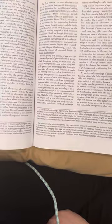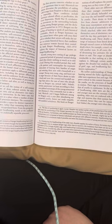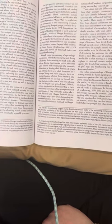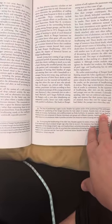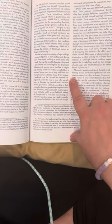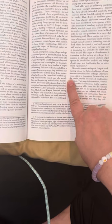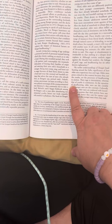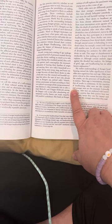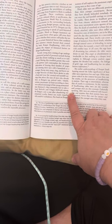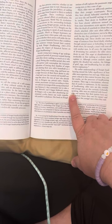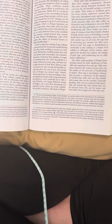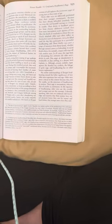Ilongots use the analogy of hunting to speak of such historical vicissitudes. Much as Ilongot huntsmen say they cannot know when game will cross their path or whether their arrows will strike their targets, so certain historical forces that condition their existence remain beyond their control. My book, Ilongot Headhunting 1883-1974, explores the impact of historical factors on Ilongot headhunting. Second, young men coming of age undergo a protracted period of personal turmoil during which they desire nothing so much as to take a head. During this troubled period, they seek a life partner and contemplate the traumatic dislocation of leaving their families of origin and entering their new wife's household as a stranger.